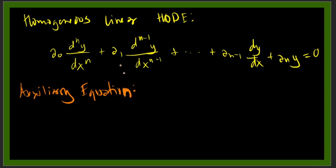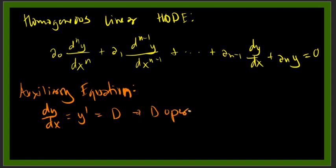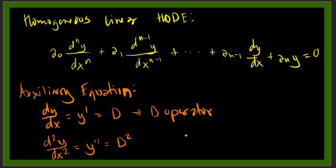What is an auxiliary equation? The derivative dy/dx, or y-prime, can be written using the D-operator, where D represents the derivative. If we have a second-order derivative, y double prime, this becomes D-squared. For a third-order derivative, it becomes D-cubed.